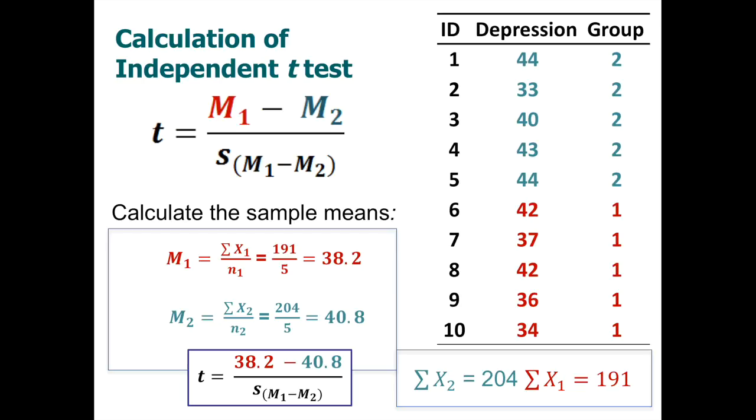So I take mean 1 minus mean 2. And I'm already starting to see that they have a negative number, which is what we want. We're trying to think, okay, does this new therapy, does it decrease the depression rates? So 38 minus 40. But now we need to find the denominator, this estimated standard error of mean differences.